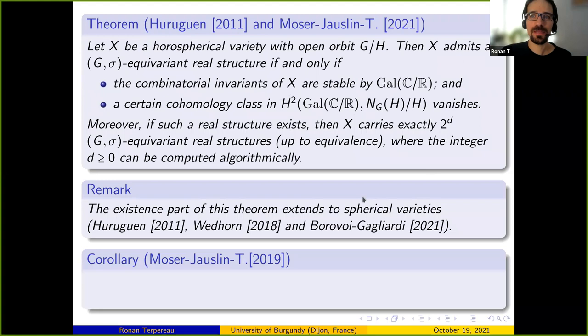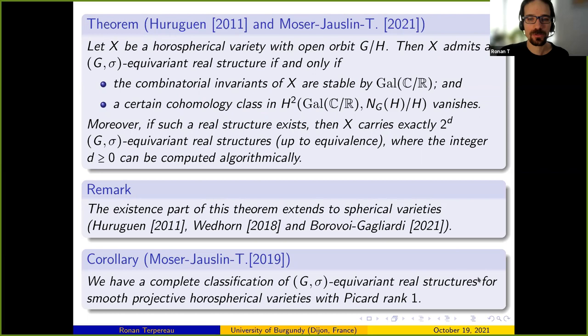Also, in our paper with Lucie, we applied this result to smooth projective horospherical varieties with Picard rank 1 and obtained a complete classification of equivariant real structures. In particular, we proved that when there is a real form, there is at most one — and we know exactly which ones have a real form.